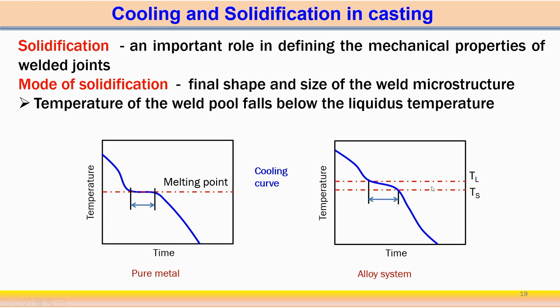In an alloy system, solidification does not occur at a single temperature. Rather, it occurs over a range of temperatures between the liquidus temperature and the solidus temperature. Solidification starts at the liquidus temperature and ends at the solidus temperature under equilibrium solidification conditions. This is another cooling curve associated with the alloy system, easily distinguishable from that of a pure metal.